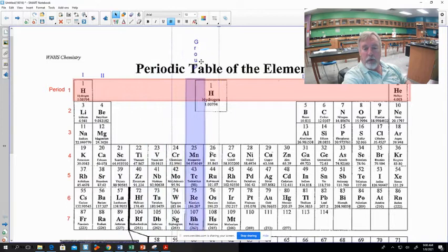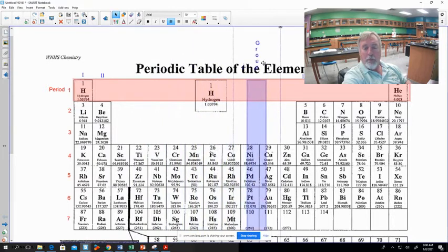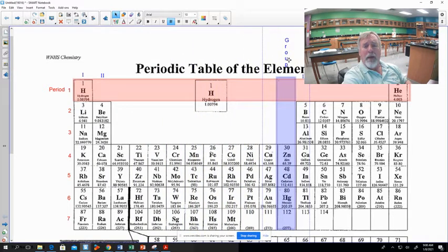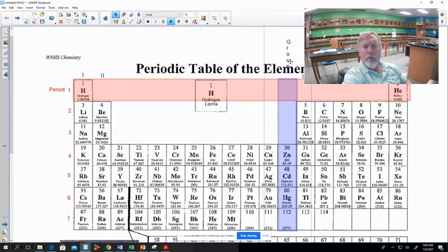We're going to skip all these ones in the middle. These are part B of the periodic table. You really don't need to worry about that. I'll tell you a little bit about it later, but it's not important for our purposes.